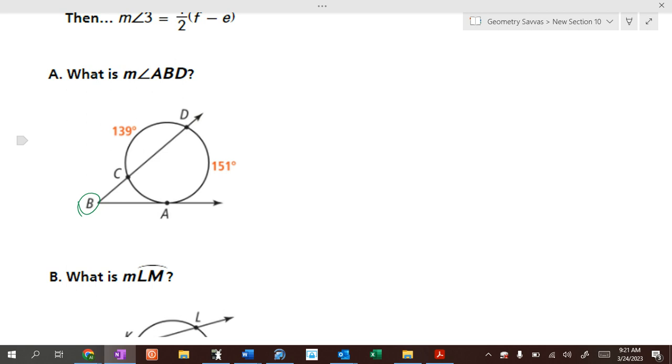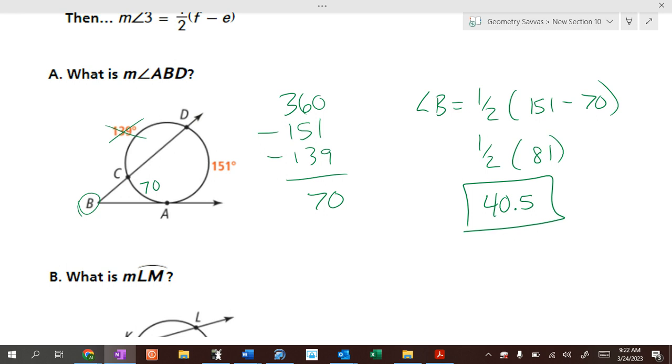Well, how many degrees are in a circle? 360. So if you take 360 minus 151 minus 139, what do we get? 70. Sounds good to me. So that arc is 70. Now we can do our formula. Angle B is one half of the big arc, 151, minus the little arc of 70. Now we don't care about this one because that's outside of the angle. We only used it so we could figure out what 70 was. But we use the big arc minus the little arc. So one half of 81. Half of 81 is 40.5. There we go, angle ABD.